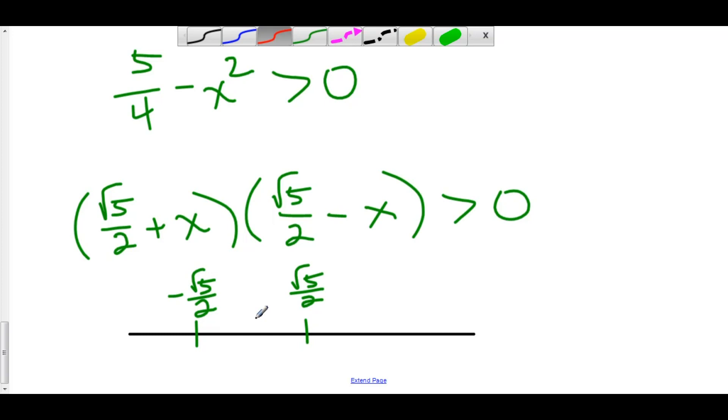If we look in between, we can check x equals 0. 5 over 4 minus 0, that's positive. Let's look to the left of negative root 5 over 2. How about negative 10. 5 over 4 minus 100, way negative. Let's try positive 100. 5 over 4 minus positive 100, still going to be negative.